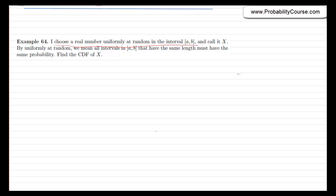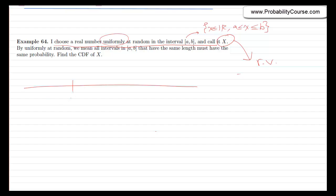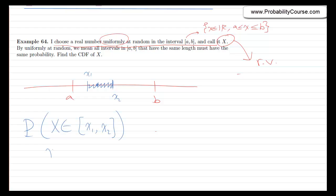Let's start with an example. I choose a real number uniformly at random in the interval a to b — the set of all real numbers x between a and b — and call it x. Choosing uniformly means that the probability that x belongs to the subinterval from x1 to x2 (where a ≤ x1 < x2 ≤ b) is the length of that interval, x2 minus x1, divided by the total length b minus a.